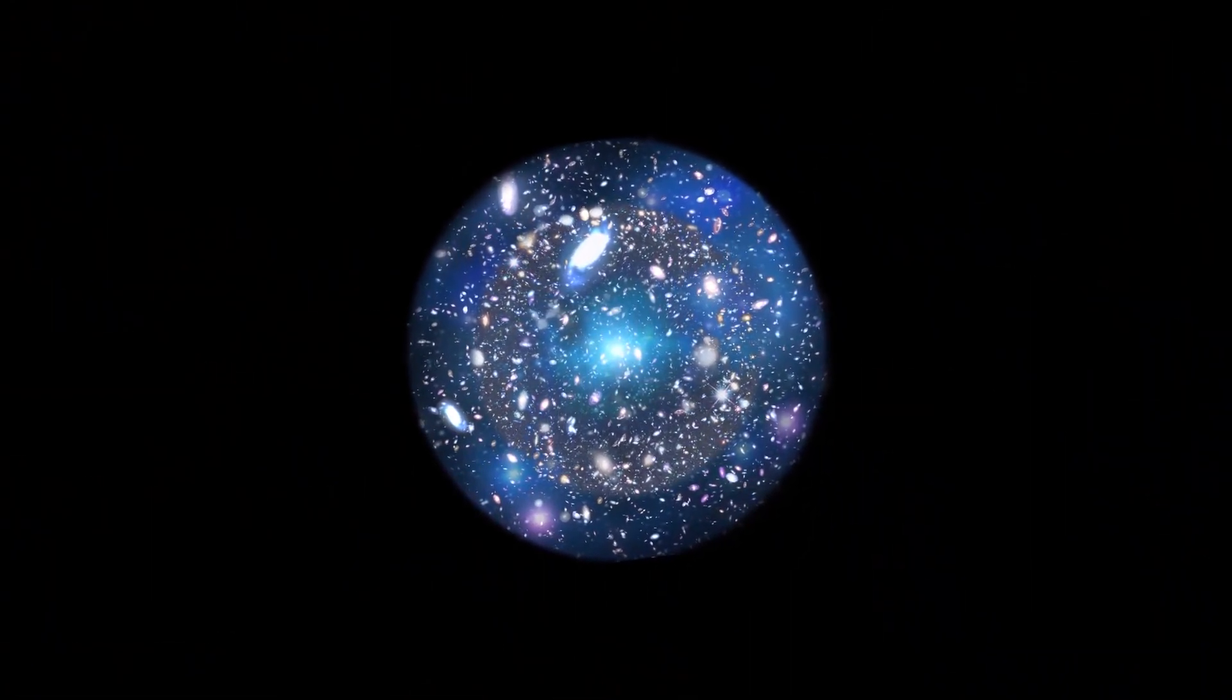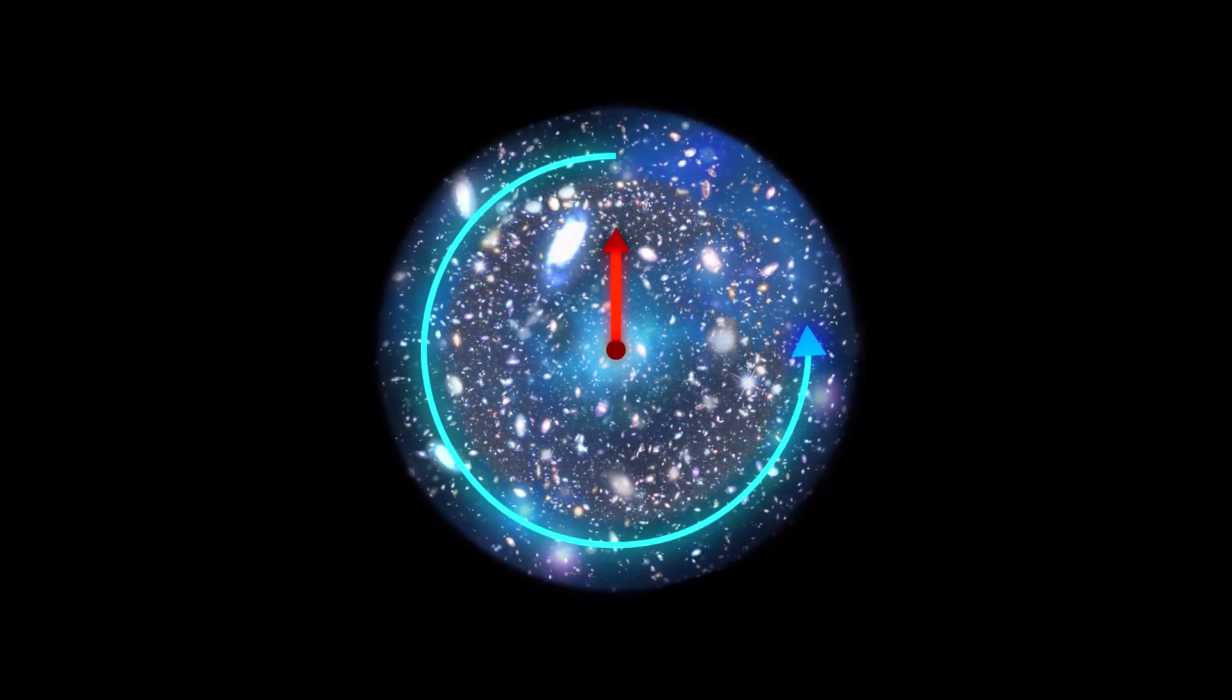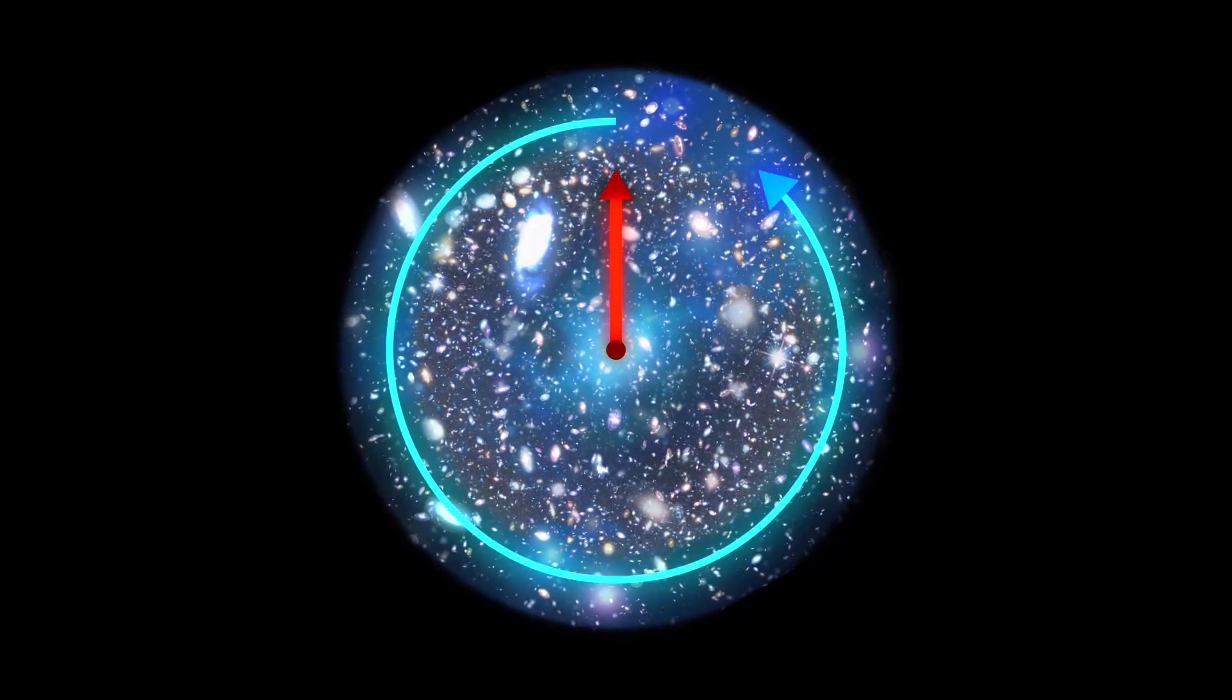And we also have to note that this large sphere is growing from inside to outside. So, the sphere of the universe has two linear and rotational motions.